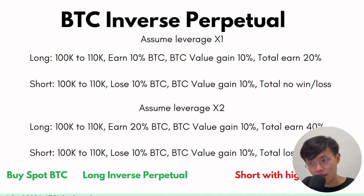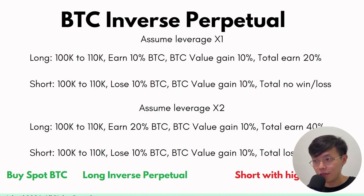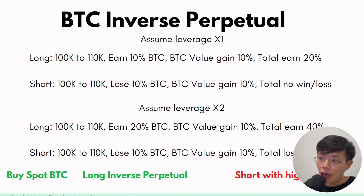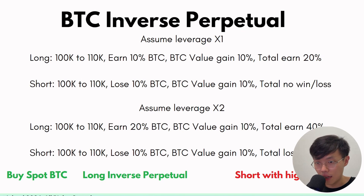In the perpetual contracts, you can play leverage. If you were to use 2x leverage, for example, and you long from 100K to 110K, you earn 20% from leverage and the BTC value gains 10%, so in total you earn 40%. And if you short it with 2x leverage but the price goes up, you lose 10% on the contract but gain 10% on BTC value, so your total loss is 30%.